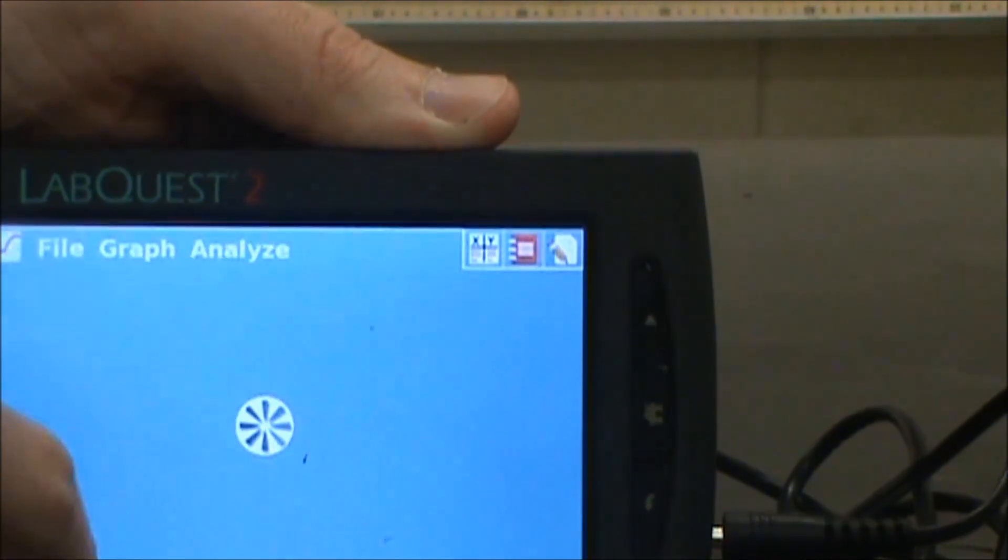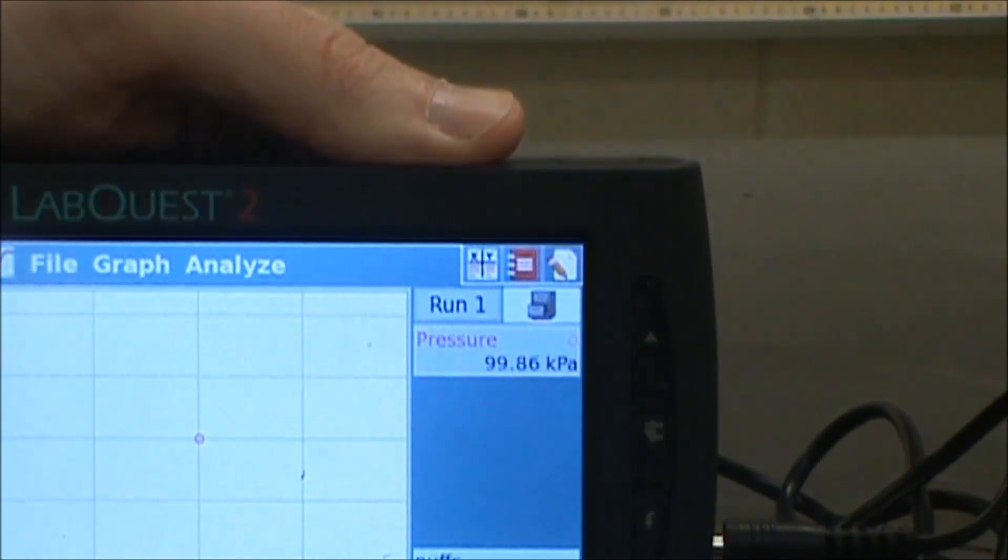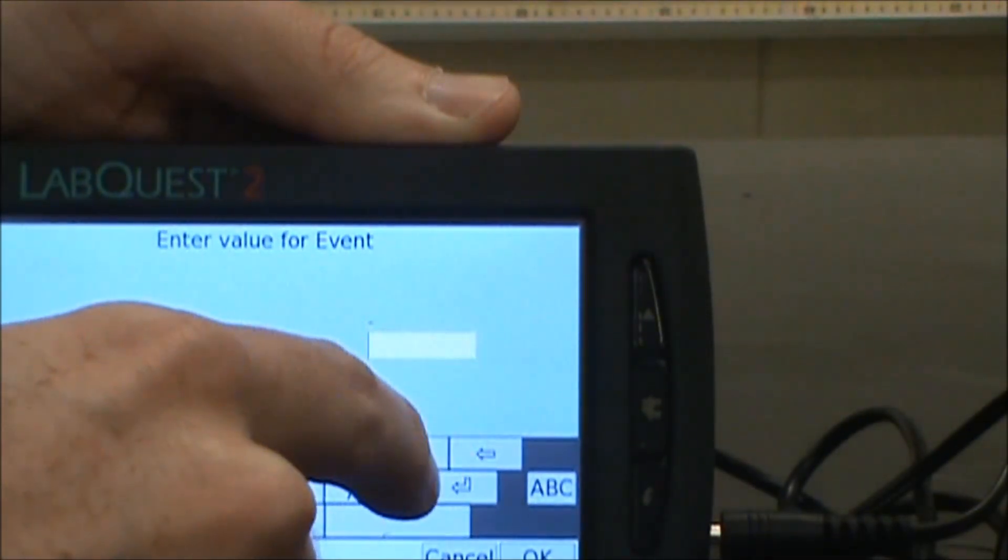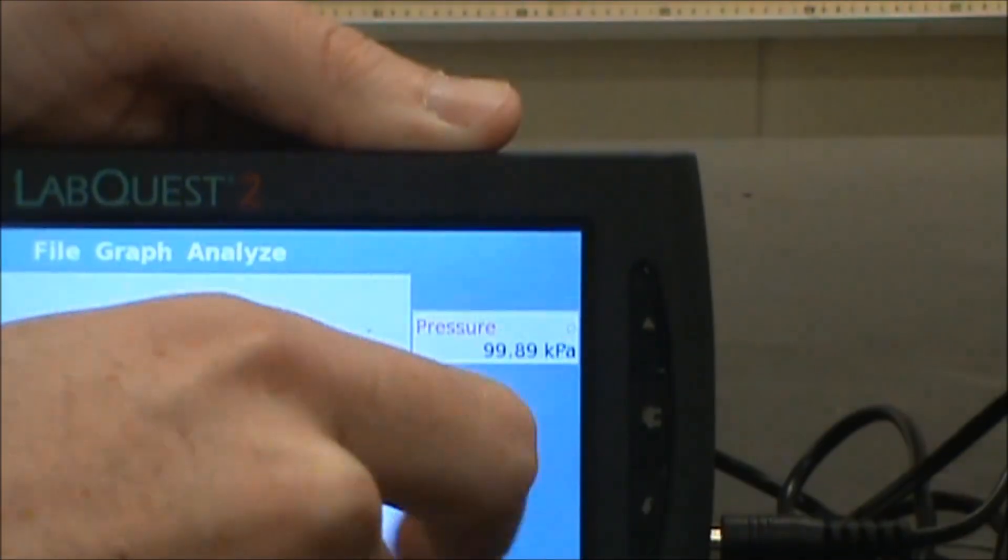I'm going to hit play. That's going to allow me to start tracking what the pressure is as I put more and more things in. To start, this is the starting pressure. I'm going to hit keep. I'm actually going to put in that I've put in zero puffs. OK.